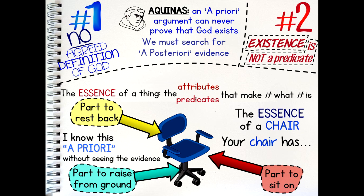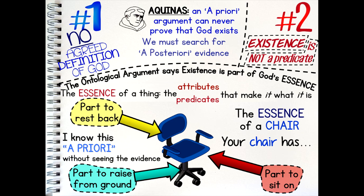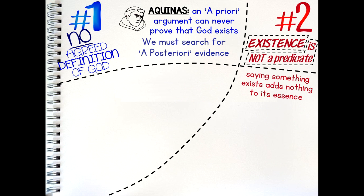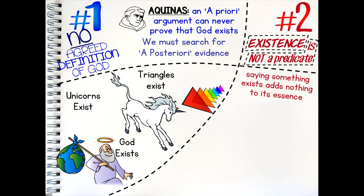Similarly, the ontological argument claims that since existence is part of the essence of God, we can know without even seeing synthetic evidence that God has existence. But many critics believe this is false. Saying something exists does not add anything to the essence of that thing. Saying God exists, or unicorns exist, or triangles exist, doesn't tell us anything new about God, unicorns, or triangles. So it seems that existence cannot be part of their essence.